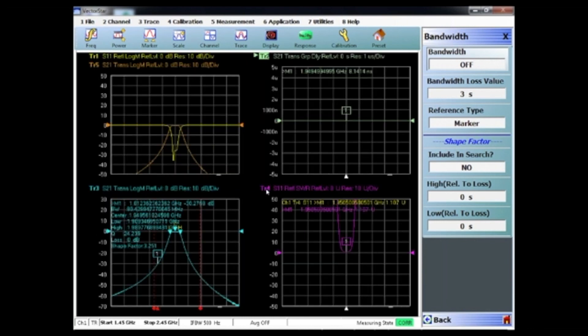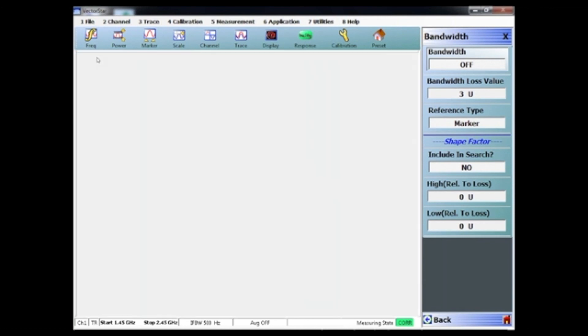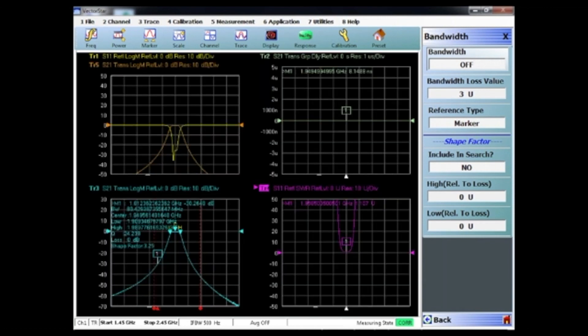Another common measurement is VSWR, and within the pass band you'll have a specification. In our case, this is 1.107.